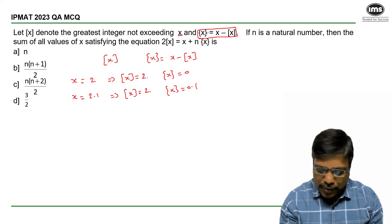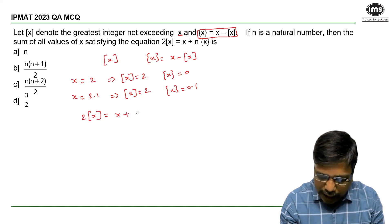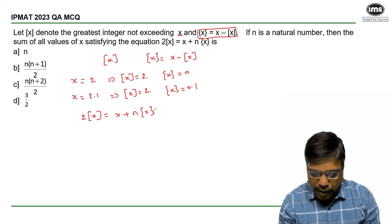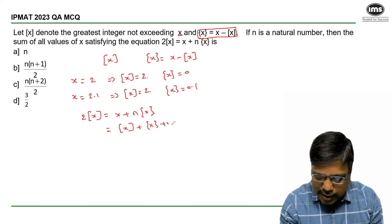Now the given equation is 2[x] = x + n{x}. I can write x as [x] + {x}.